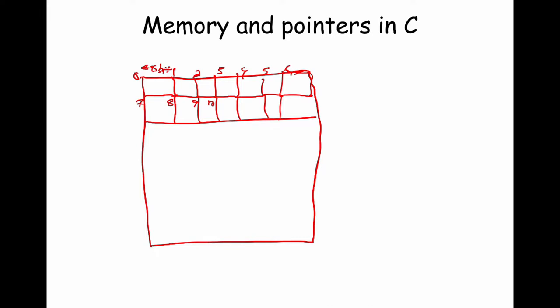In C, the runtime system allows you to manipulate memory directly, and it does that with a special variable called a pointer. Suppose you have a variable called A, stored at memory location 16 in this example. Going by this scheme we have 11, 12, 13, 14, 15, 16 — variable A is located at address 16. In that variable you can store a value. There are special variables called pointers — special types — in C.